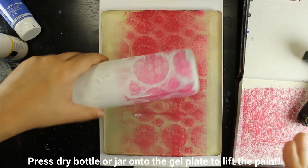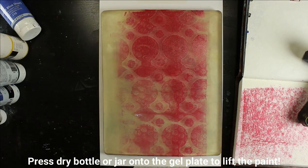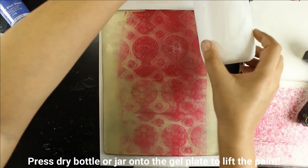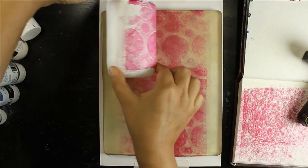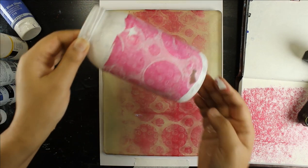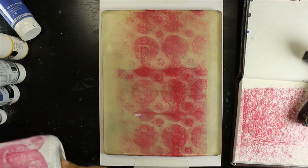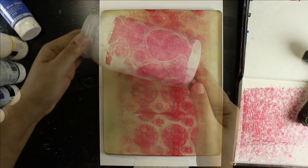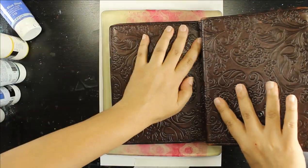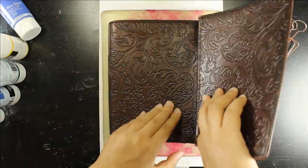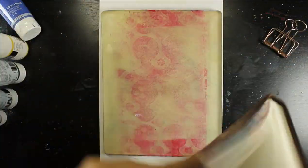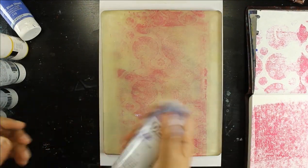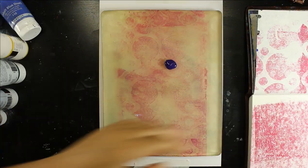So now what I'm doing is I am rolling parts of my jar and my bottle onto the gel plate to pick up some of the paint that's on the gel plate. So there you can see that it lifted some of the gesso off because gesso isn't necessarily a good thing to use on glass. Instead you should be using a primer. But I covered it up and I got it to work in the end. So all went well.